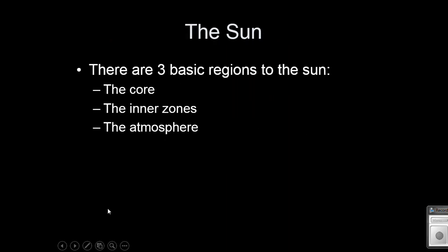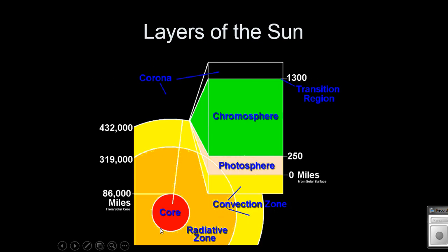So our sun, which formed in the center of our accretion disk, has three basic regions. And this is very similar for all of our stars, especially our medium stars that are the same size as the sun. So we have three basic regions. We have a core, we have an inner zone, and we have an atmosphere. The core obviously being in the center, this is where fusion is actually happening. And everything else around it is happening because that fusion is happening in the core.